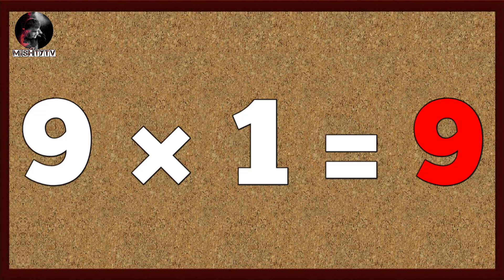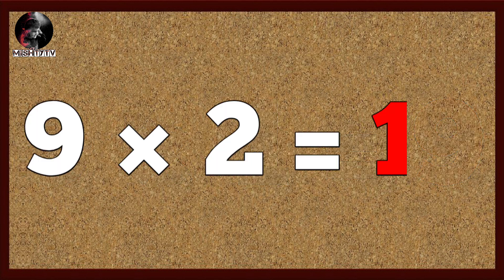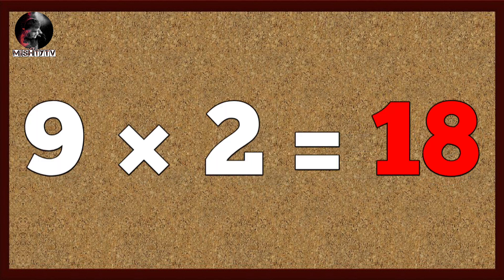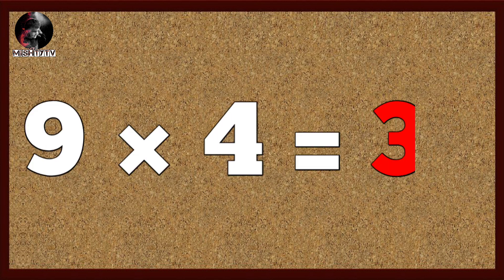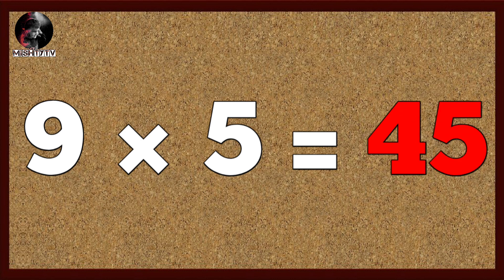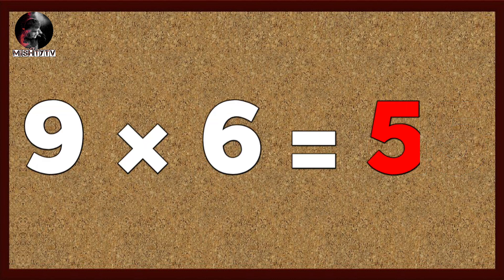Table of nine. Nine one's are nine, nine two's are eighteen, nine three's are twenty-seven, nine four's are thirty-six, nine five's are forty-five, nine six's are fifty-four.